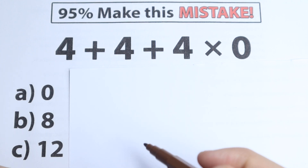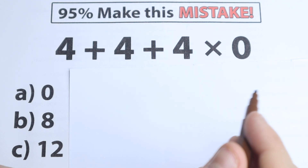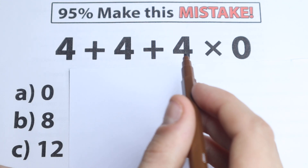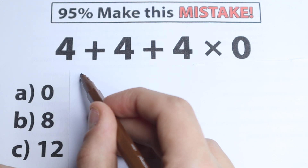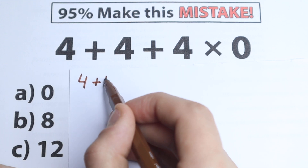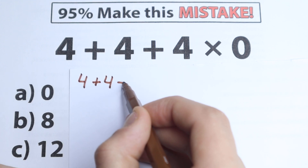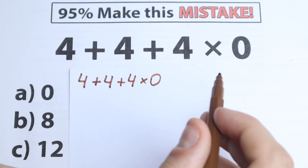So we have options A, B, and C. I hope you solved it, and right now let's try to solve it together. Here's our question: we have 4 plus 4 plus 4 and times 0.